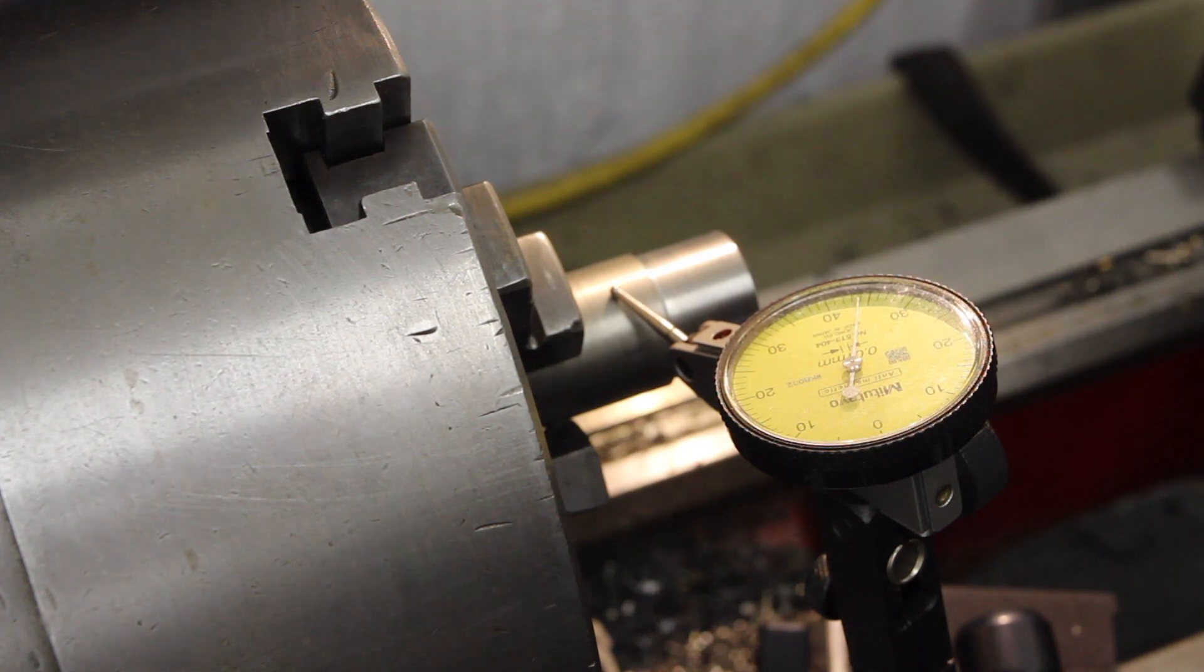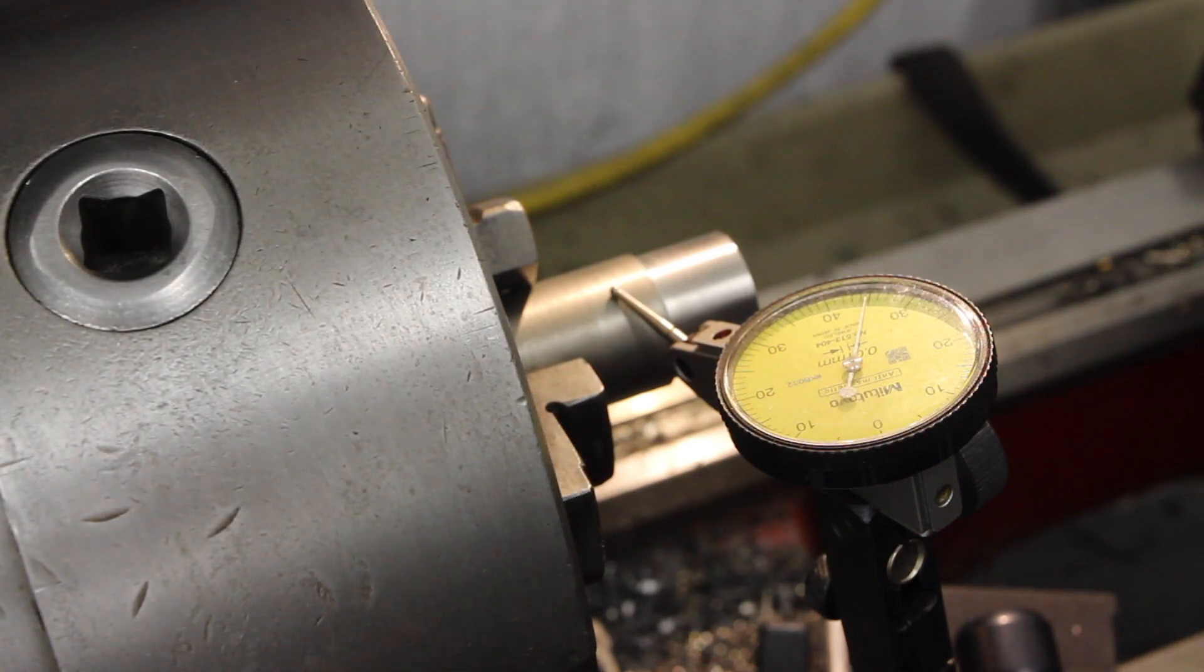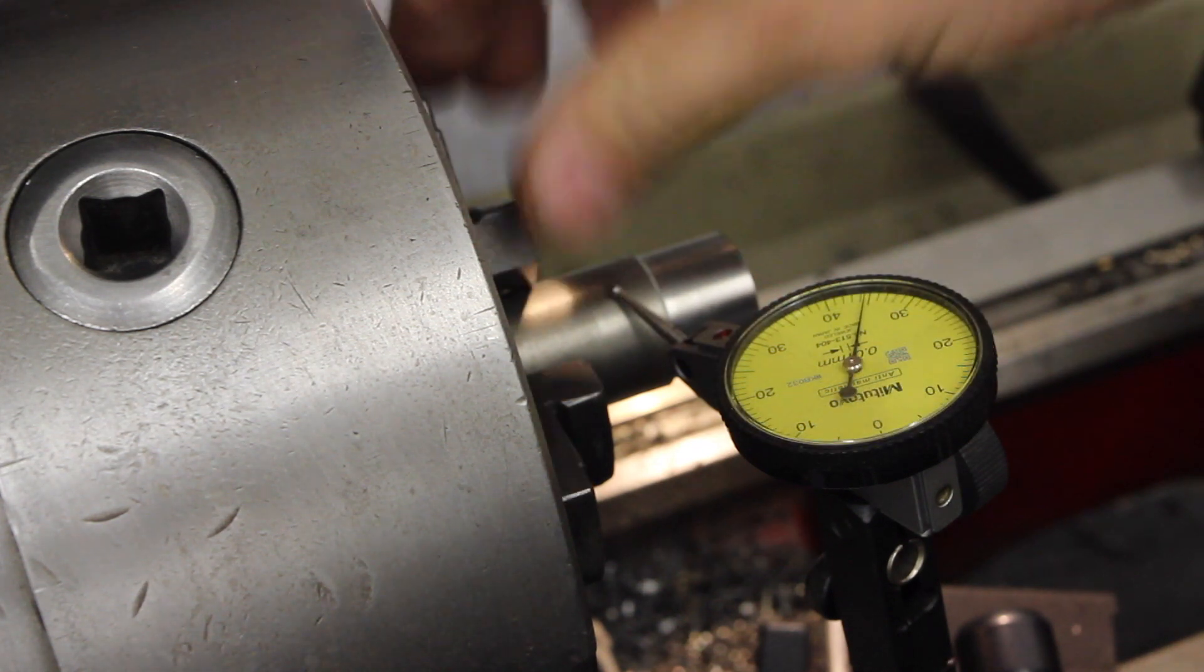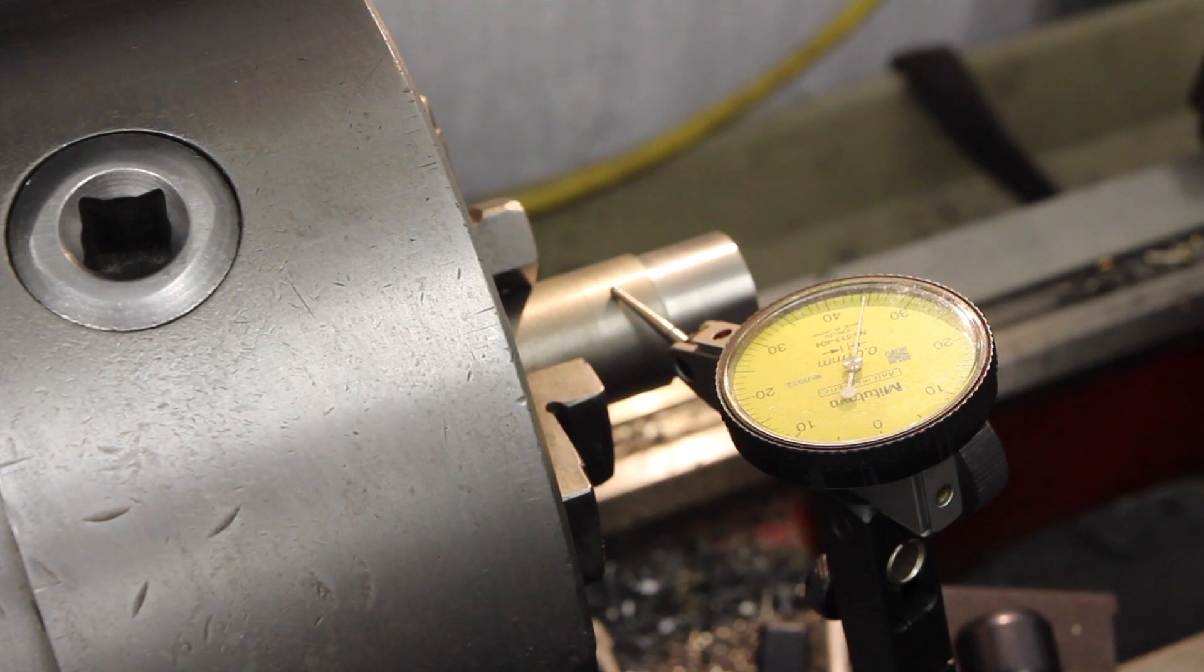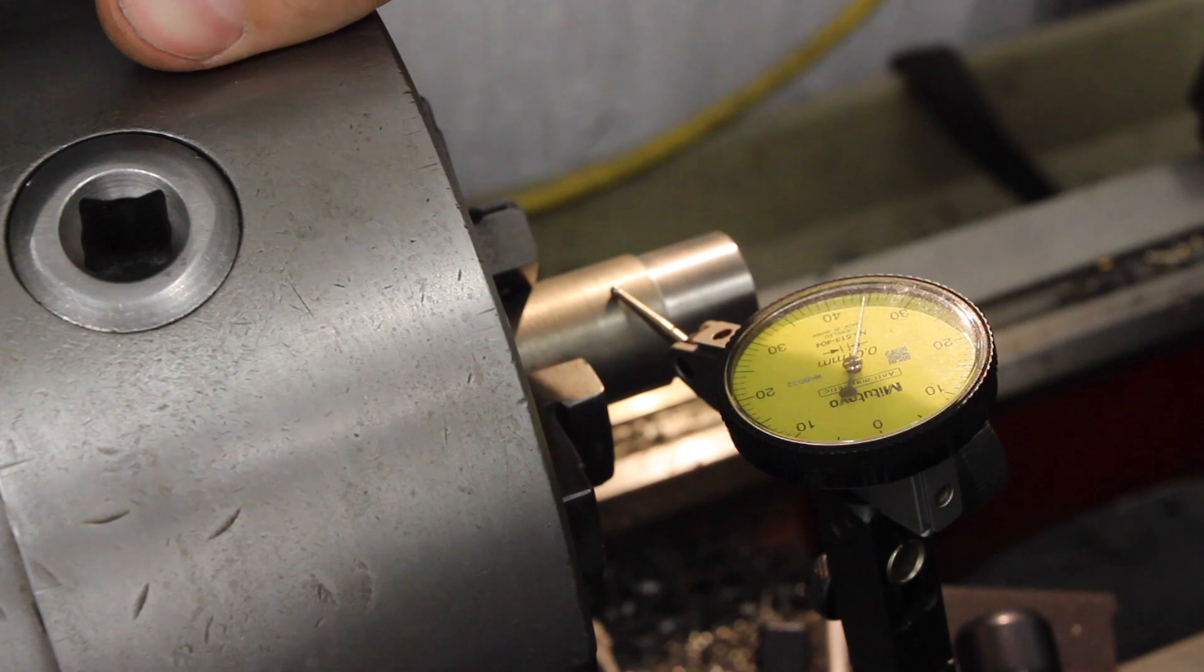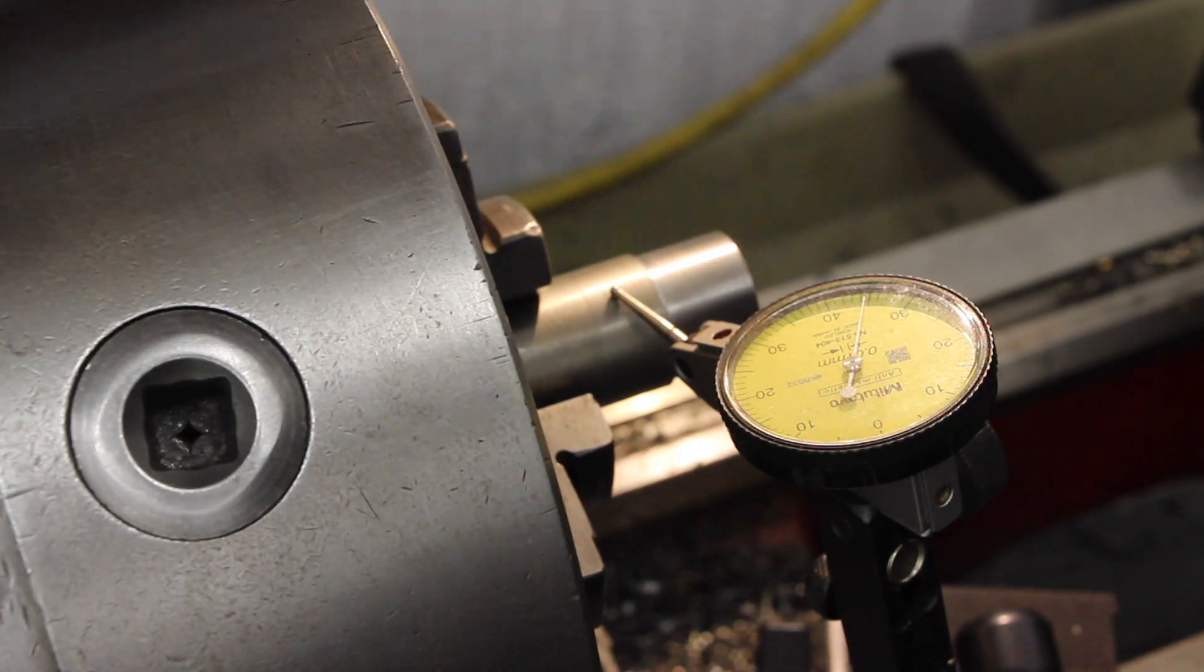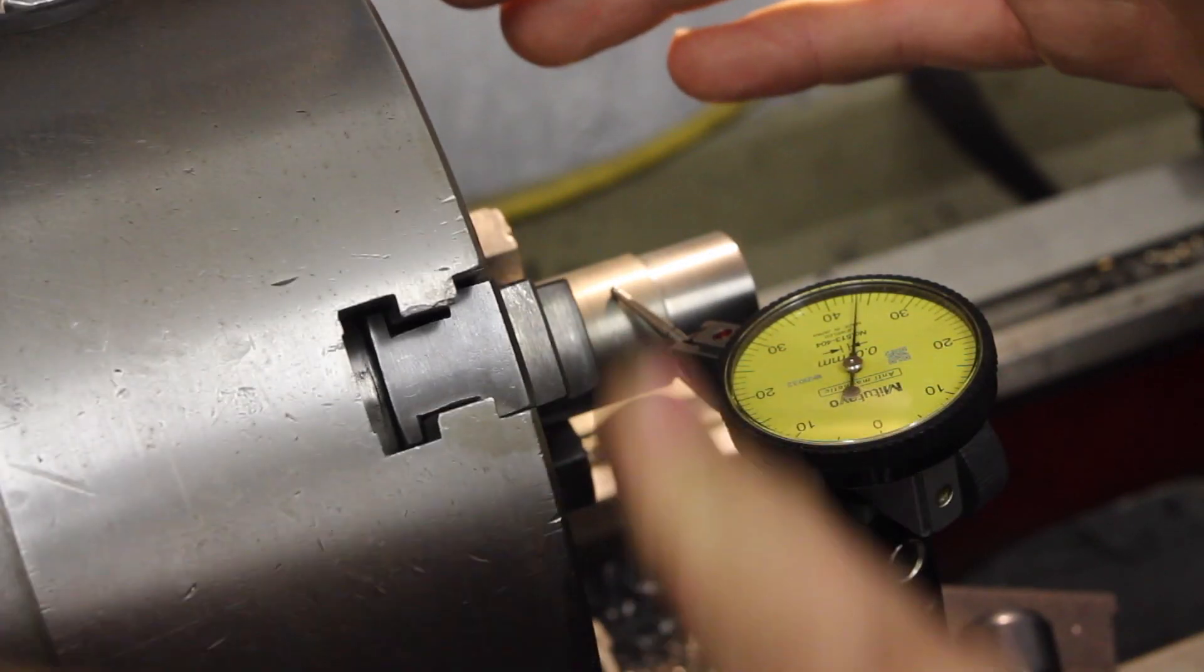Normally you don't even consider runout with a three-jaw chuck with hard jaws because you're working from bar, you're going to turn anything anyway. If you are going to be doing a second operation in hard jaws, yeah, just stick a clock on it. Decide what you can accept as a runout. If you've got a drawing, obviously stick to your drawing tolerances. And go around with something soft and give it a tap. As I say, I got lucky there. That was a nice easy one. I got that first time.